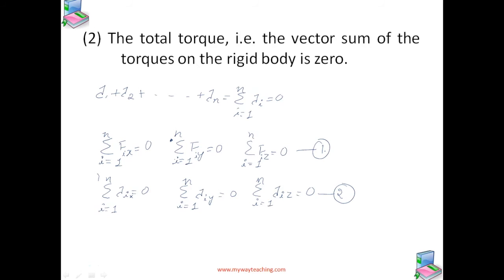In a number of problems, all the forces acting on our body are coplanar. Then we need only three conditions to be satisfied for mechanical equilibrium. Two of these conditions correspond to translational equilibrium — the sum of the components of the forces along any two perpendicular axes in the plane must be zero. The third condition corresponds to rotational equilibrium — the sum of the torques along any axis perpendicular to the plane of the forces must be zero.